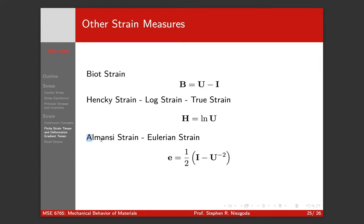And then the equivalent of the Lagrange strain, the finite strain tensor in an Eulerian framework—this would be like a strain that you would use in fluid dynamics—is the Almansi strain, which instead of one half U squared minus I, it's one half I minus inverse U squared. But these are just different ways of defining strain.